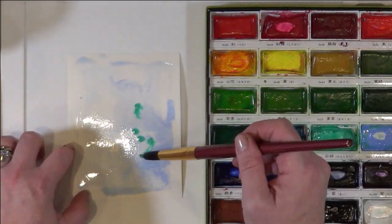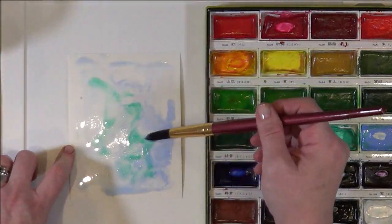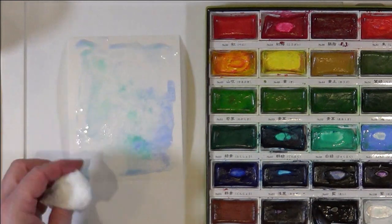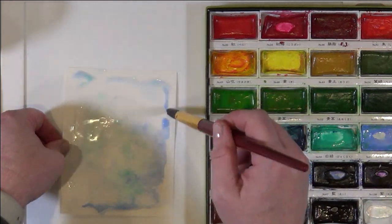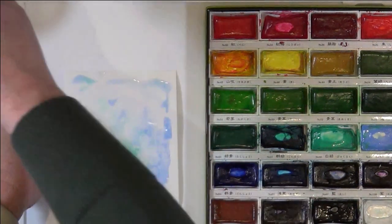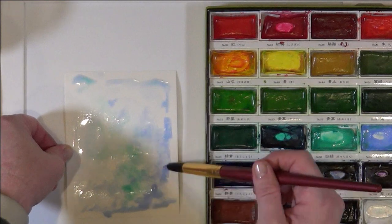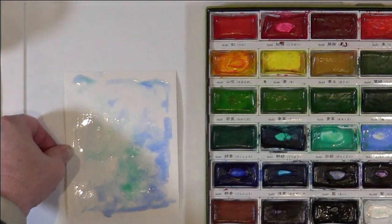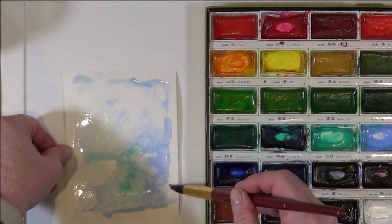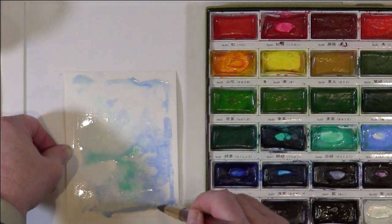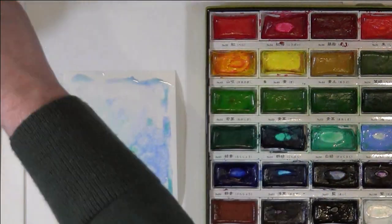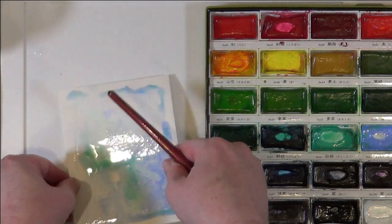I'm using Canson XL watercolor paper. It's cold press, 140 pound, and comes in a big pad. I bought mine from Michaels - they were buy one get one half off, which is a really good deal. I cut them down to about a five by seven size, and they're great to have on hand. It's not the best watercolor paper you could use, but it's great for things like this. I love the cold press and the texture it gives.